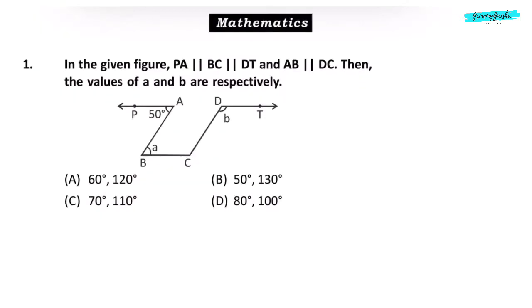Mathematics Question 1. In the given figure, PA is parallel to BC, parallel to DT, and AB is parallel to DC. Then, the values of A and B are respectively. Angle PAB is equal to 50 degrees. So angle ABC will also be 50 degrees, vertically opposite angle rule.